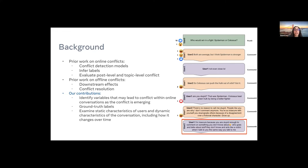The prior work in online conflicts has mainly looked at conflict detection models. They also tend to infer their labels from metadata such as upvote and downvote ratios, or just from the topic itself. And primarily most of these online conflict works have evaluated conflicts at a post level or a topic level — so at a larger scale.